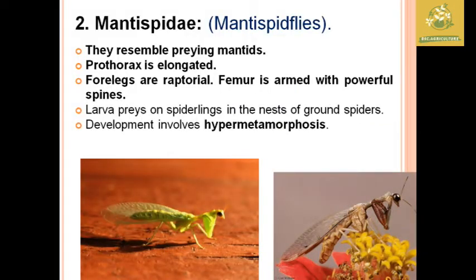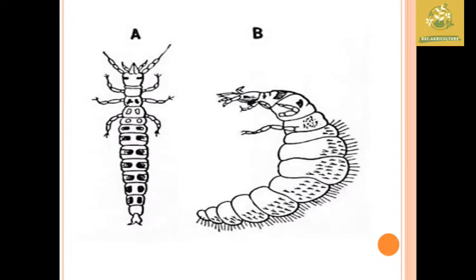After that, we are going to see about Mantispidae, whose common names are mantispid flies. They resemble praying mantids. The prothorax is elongated and the forelegs are raptorial, with powerful spines used for grasping prey. The larvae live in the nests of ground spiders. The development in this group involves hypermetamorphosis — they have more than four developmental stages.